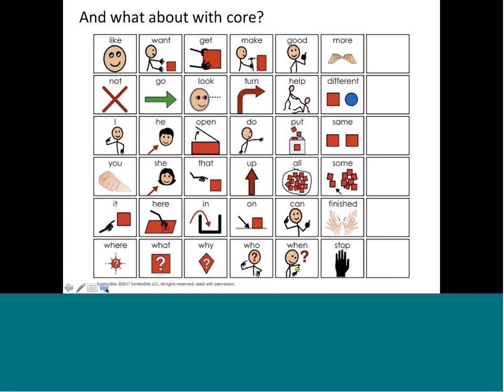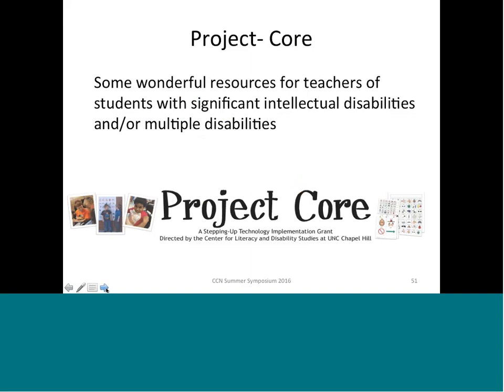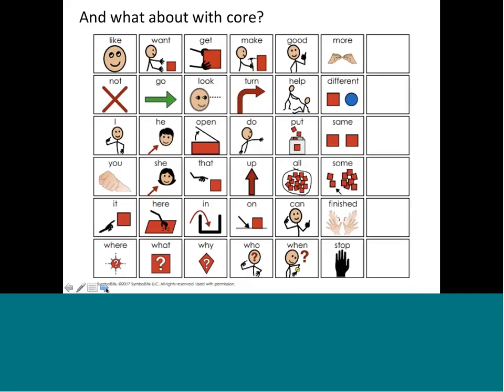Another resource is the Assistive Ware Core Classroom — which goes with the Proloquo2Go app but has great ideas even if you're not using Proloquo. You have to sign up but so far it's free. I highly recommend it if you're working in AAC. Tobi Dynavox also has lots of resources on their site for core lesson planning. The original core vocabulary came from Gail Van Tatenhoven — Gail and others are coming to Edmonton at the first week of September if you're interested in learning more.